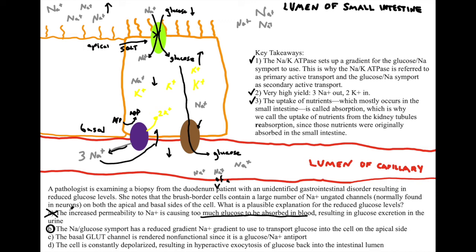Let's look at C. The basal glute channel is rendered non-functional since it is a glucose-sodium antiport. That is false. We're looking at this glute channel here, this brown one. This is merely a passive transport, facilitated diffusion. We're not using any energy here. And we're also not transporting sodium at all, let alone it being a glucose-sodium antiport. So we can cross out C.